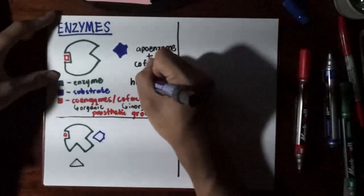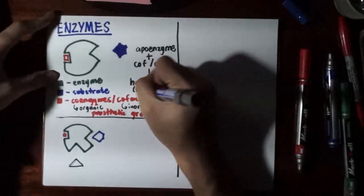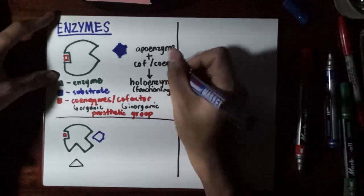If you have an apoenzyme plus the cofactor or the coenzyme, the name of the resulting complete enzyme is the holoenzyme. The holoenzyme is the fully functioning form, because if the enzyme does not have its cofactor or coenzyme — which is the apoenzyme state — it will not really work. The apoenzyme is inactive.